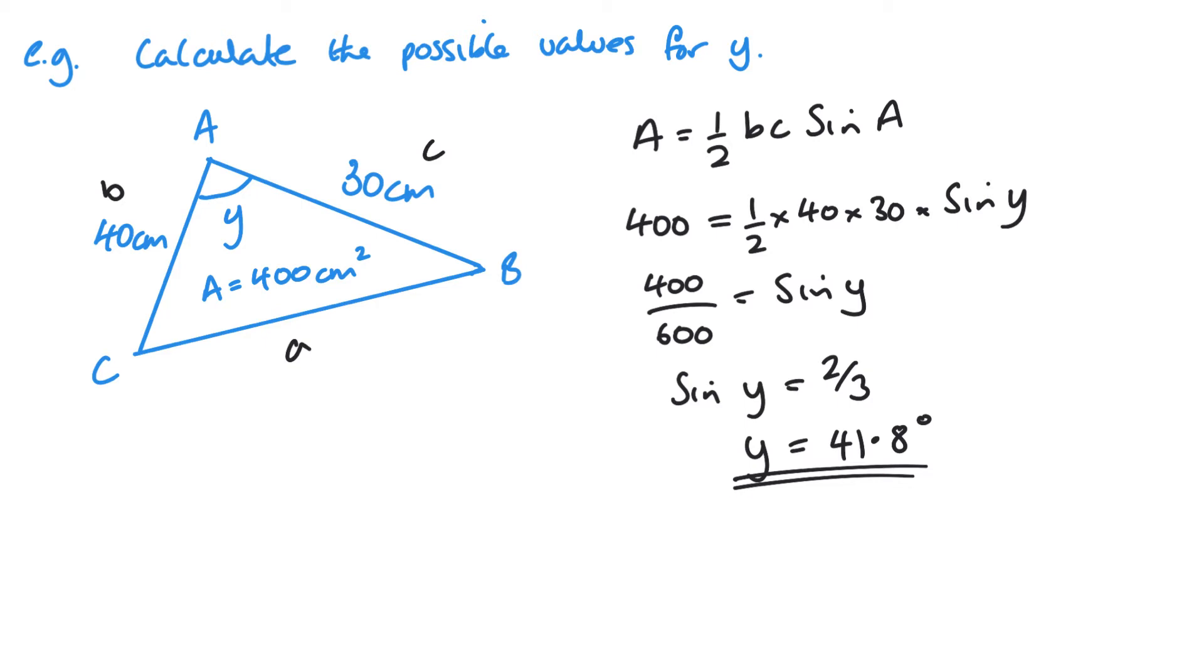We do have to think about what we did last time in the previous video where, because of the way sine is, we could actually have two potential values that work. So an alternative would be 180 minus my 41.8. I'm just using the full value in the calculator. And I get 138.2.